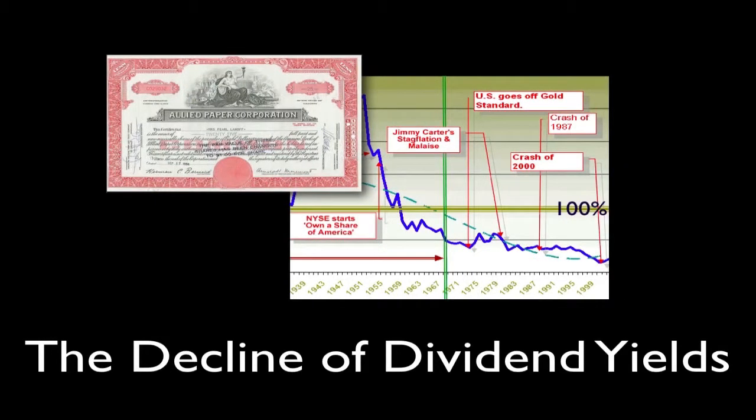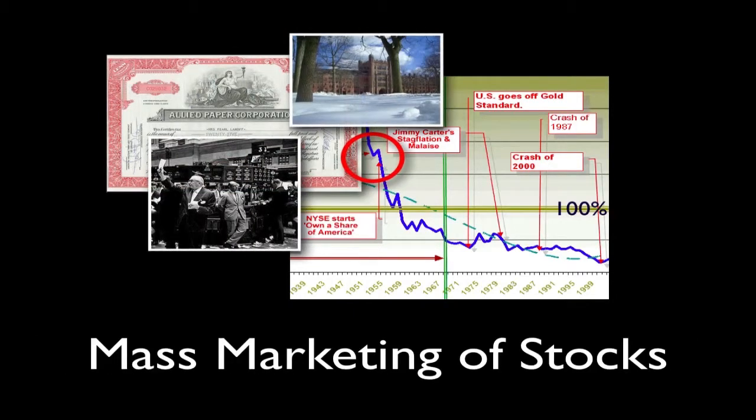After World War II, dividend yields began to fall. There were two principal reasons for this. In the 1950s, the New York Stock Exchange launched a campaign with the slogan 'own a share of America.' Merrill Lynch spent millions to bring Wall Street to Main Street. Mutual funds began to be sold door to door. Mass marketing of common stock over the next fifty years raised ownership of shares by Americans from five percent to fifty percent of the population. Consequently, stockholders became far less sophisticated than in the days of Graham and Dodd. Companies were now often controlled by mutual fund managers rather than directly by investors. Separated from investment decisions, investors lost their focus on dividends.